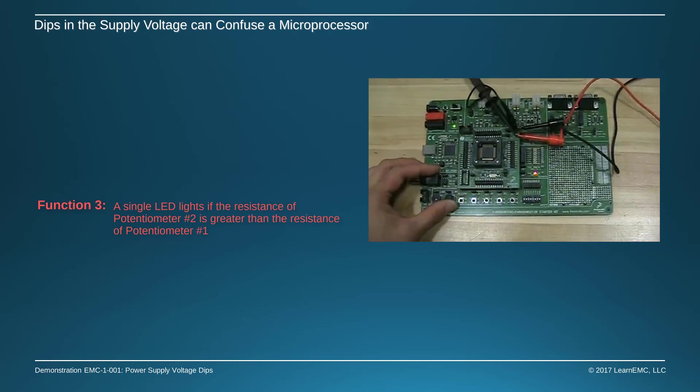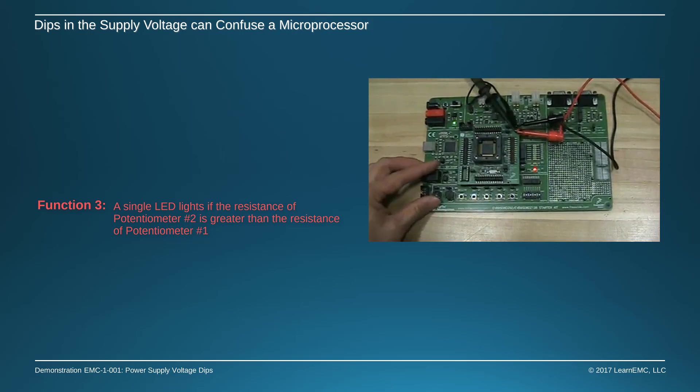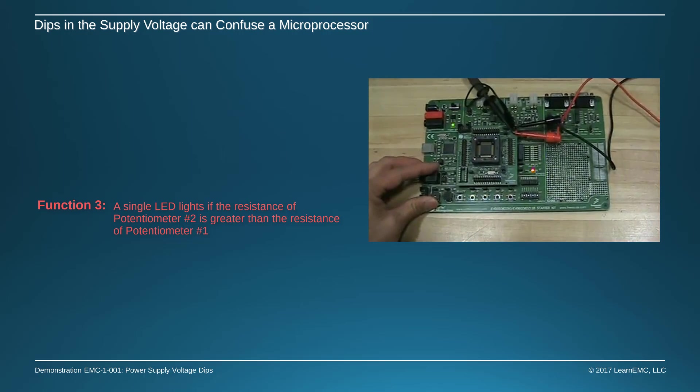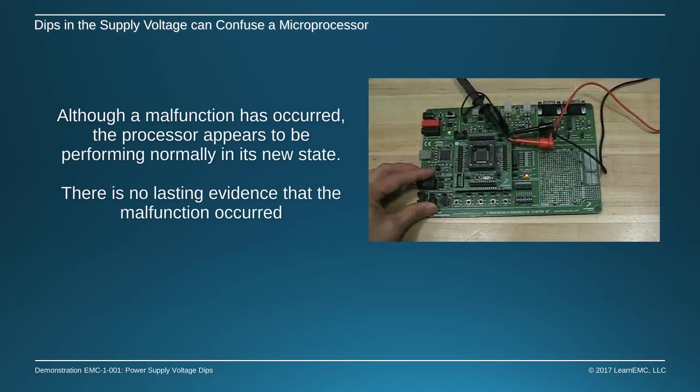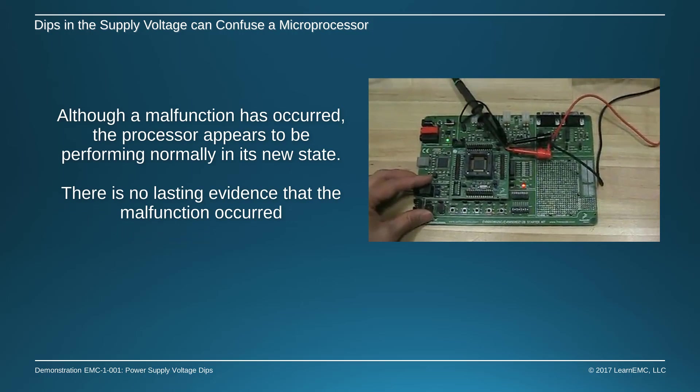Each time the processor board experiences a power dip on the order of 38 milliseconds, its state changes randomly. There is no damage to the board or its components, and there is no lasting evidence that a malfunction ever occurred.